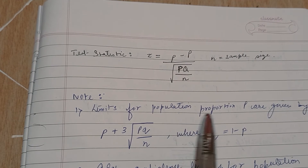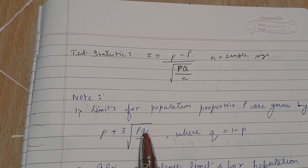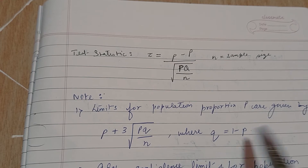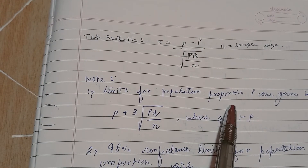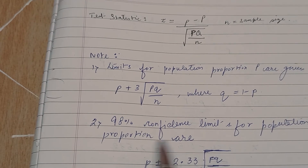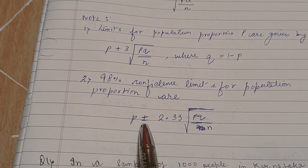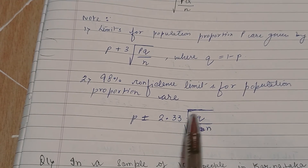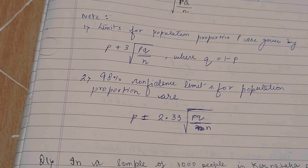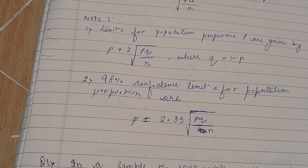The 3-sigma confidence limits for the population proportion capital P are given by: small p ± 3 × √(pq/n), where small q equals 1 minus small p. If the question asks for the 98 percent confidence limits for the population proportion, the formula is: small p ± 2.33 × √(pq/n). Note that this uses small p, not capital P. In the next lecture we will see questions on this and proceed further. Thank you.